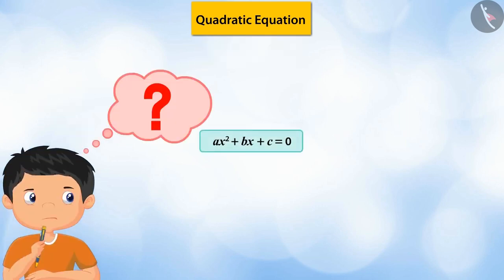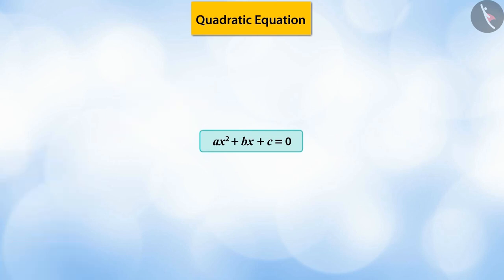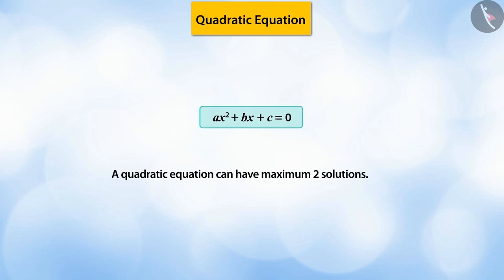Can you tell the maximum number of solutions a quadratic equation can have? Very good! Can have maximum two solutions. How did you know this? A quadratic equation has two as the highest degree. Hence, a quadratic equation can have maximum two solutions.